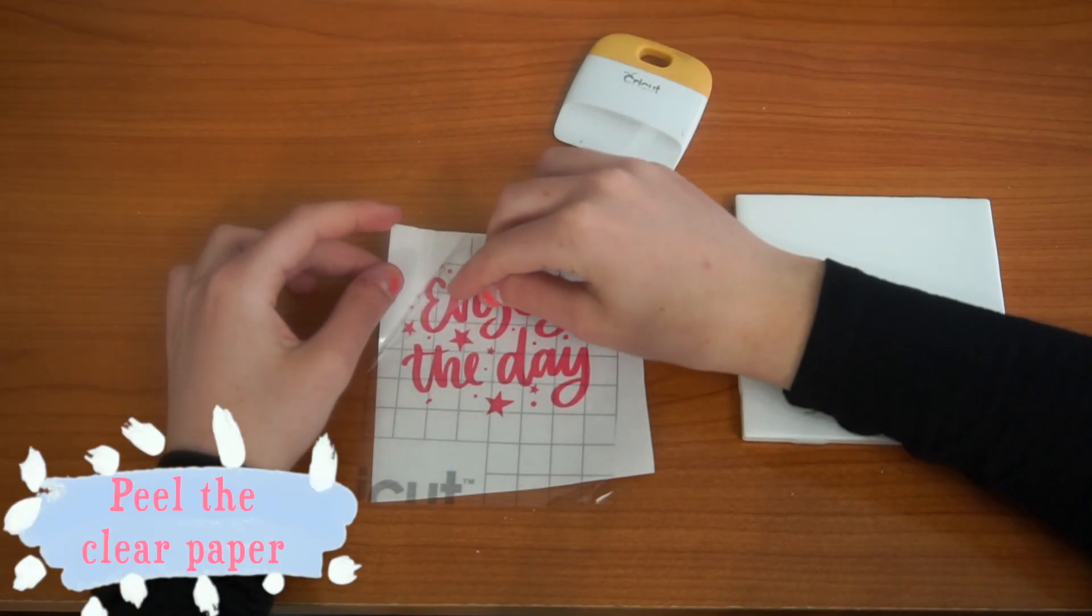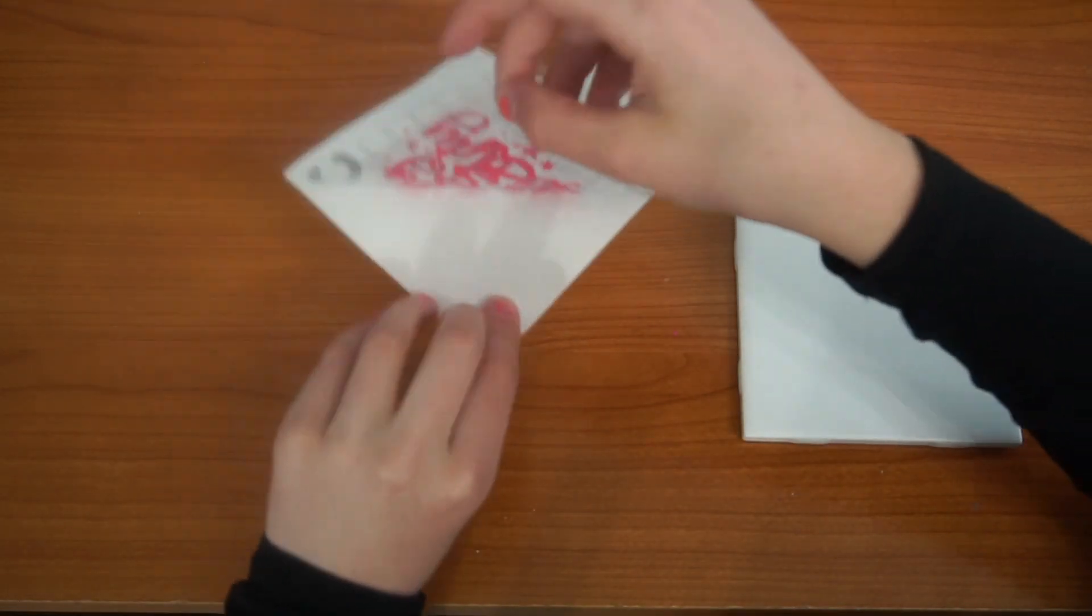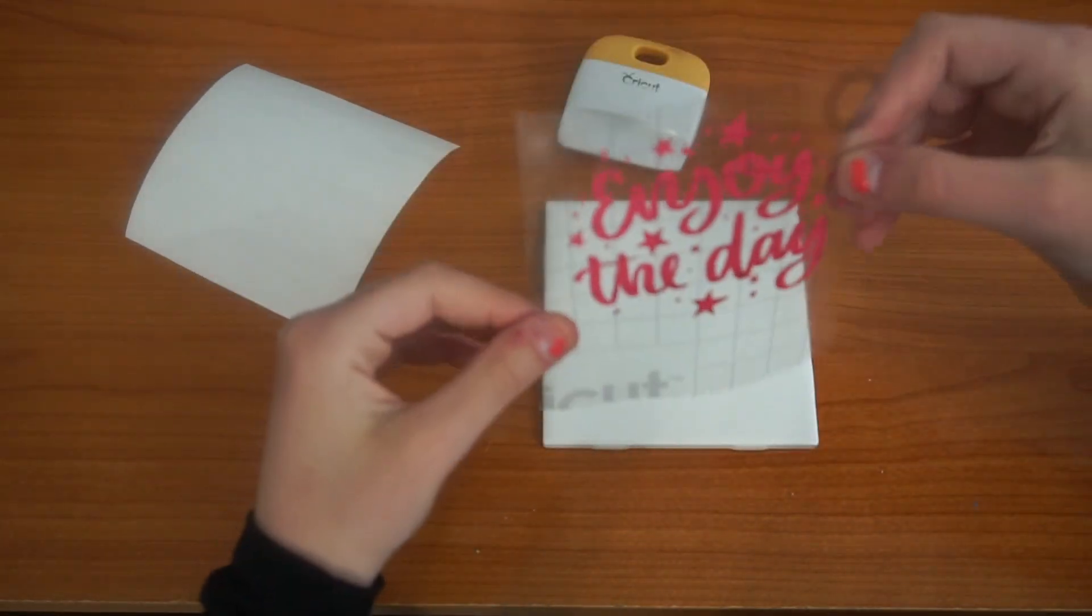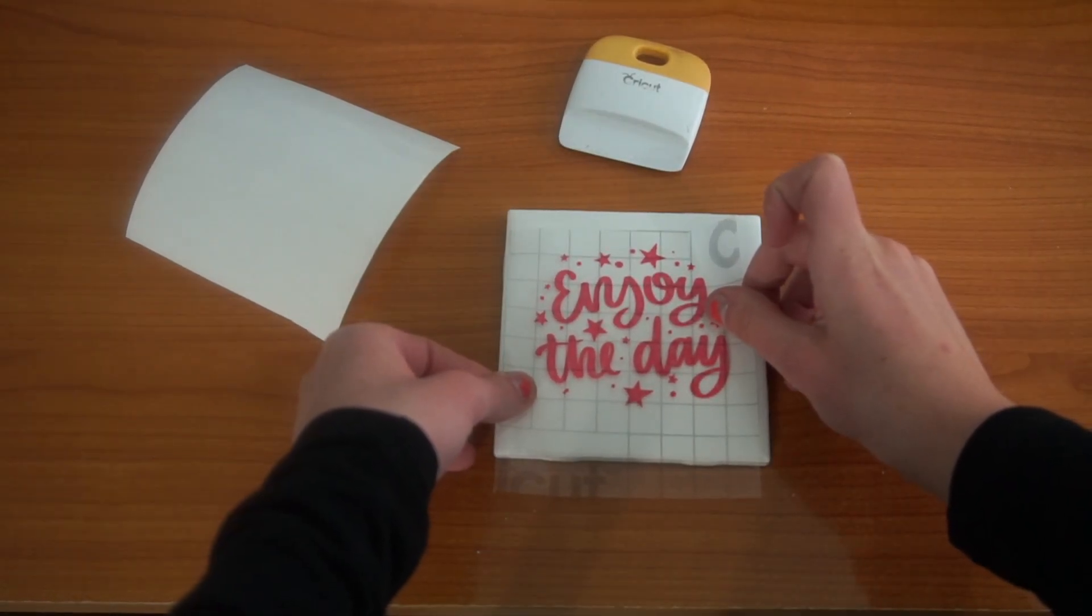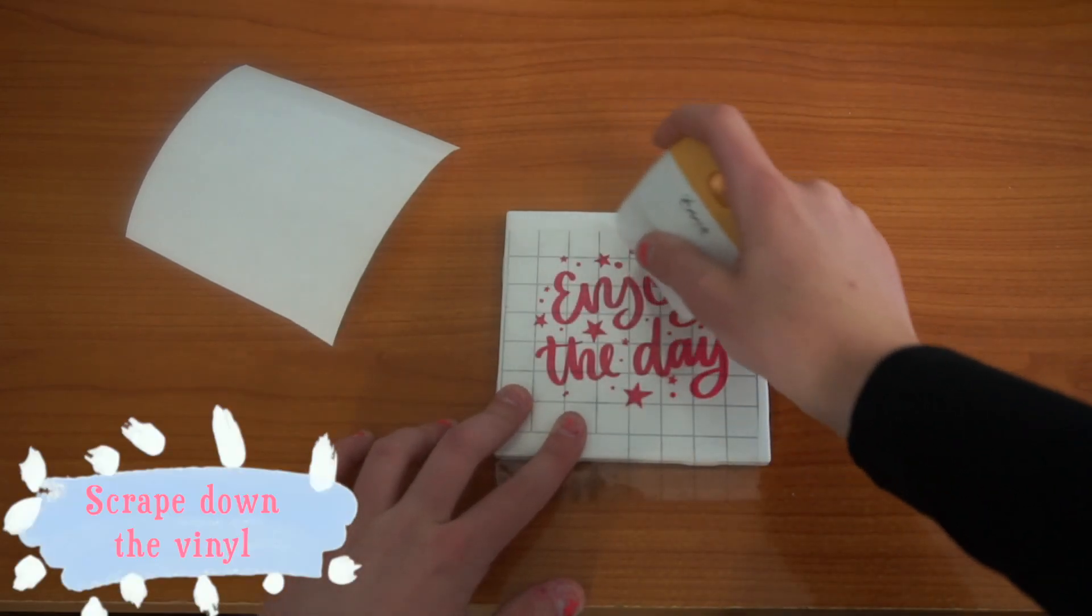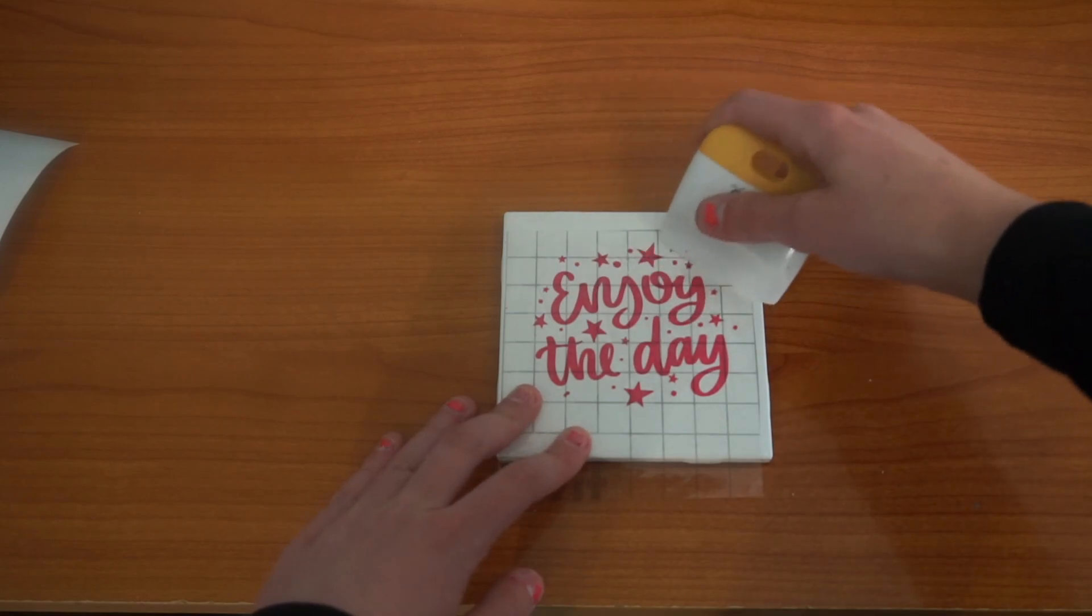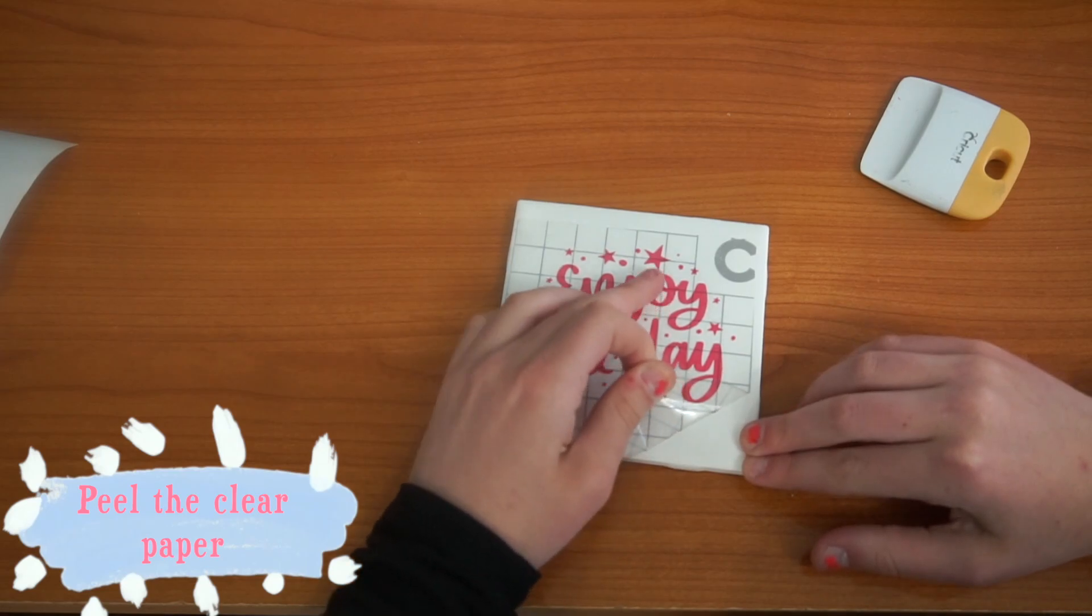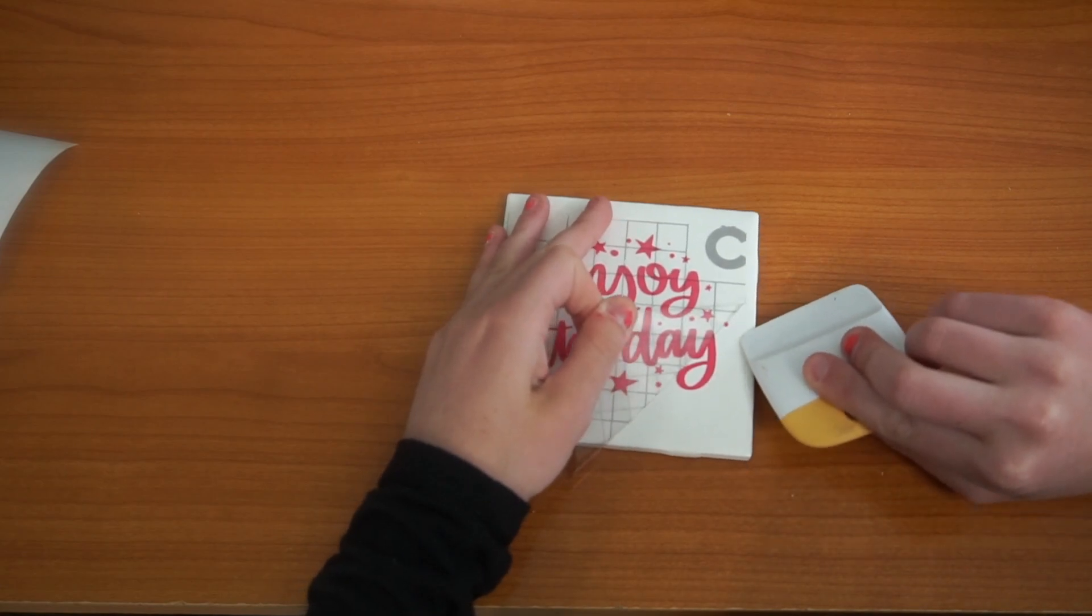Make sure every piece of the image stays on the clear paper. Place the image onto the tile. Use the scraper if you need to hold down the pieces of the image.